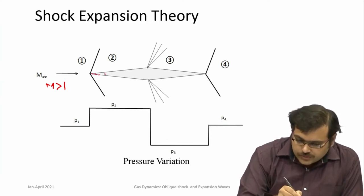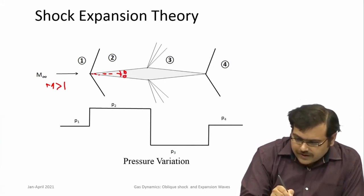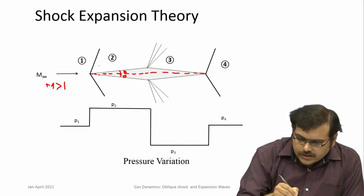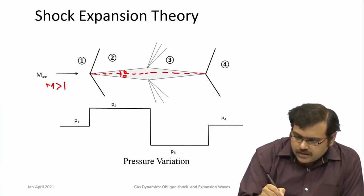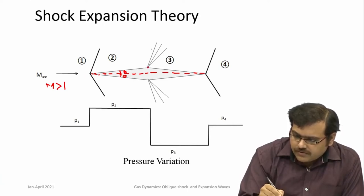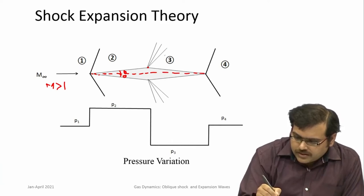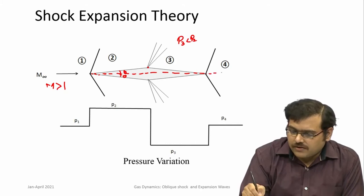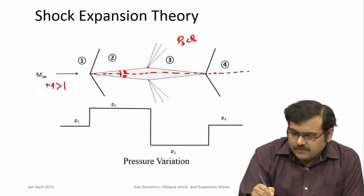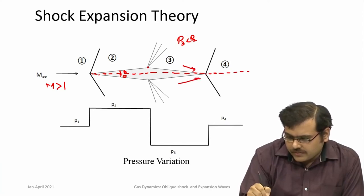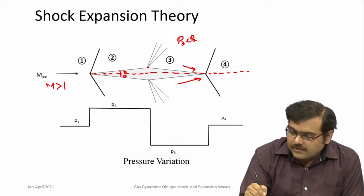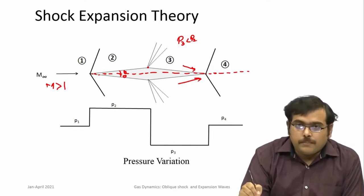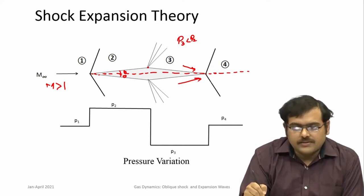This is a wedge at a very small angle, symmetric about the chord line theta. This is turning the flow towards itself so it forms oblique shocks, but at this point it turns away from the flow so expansion waves are formed and pressure decreases at region 3. P3 is less than P2. When it comes back to the trailing edge you need to apply matching conditions for the slip line. The flow has to turn into itself in order to become parallel again, and therefore another set of shocks are formed.